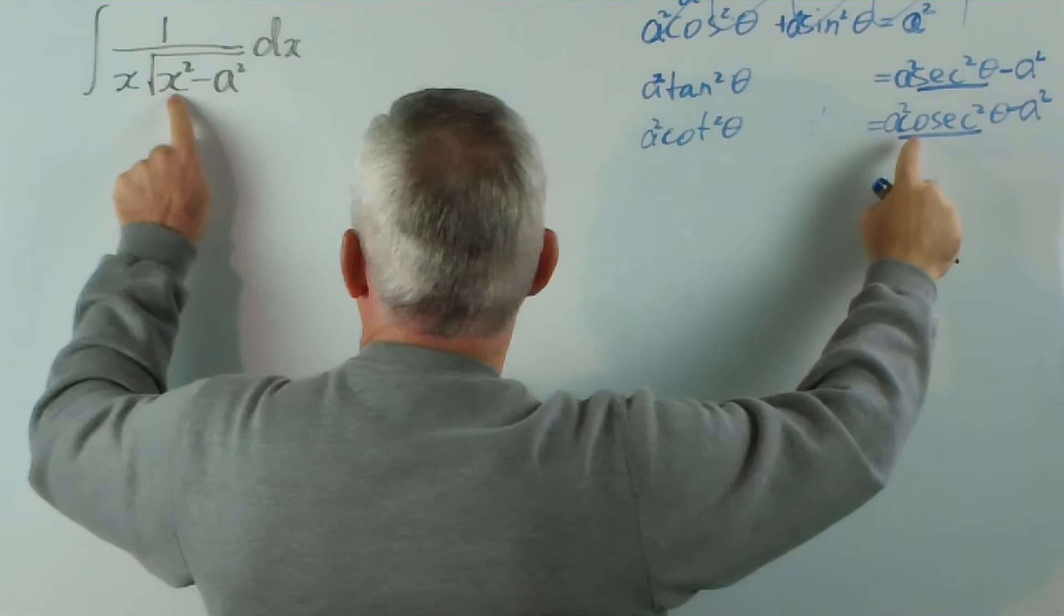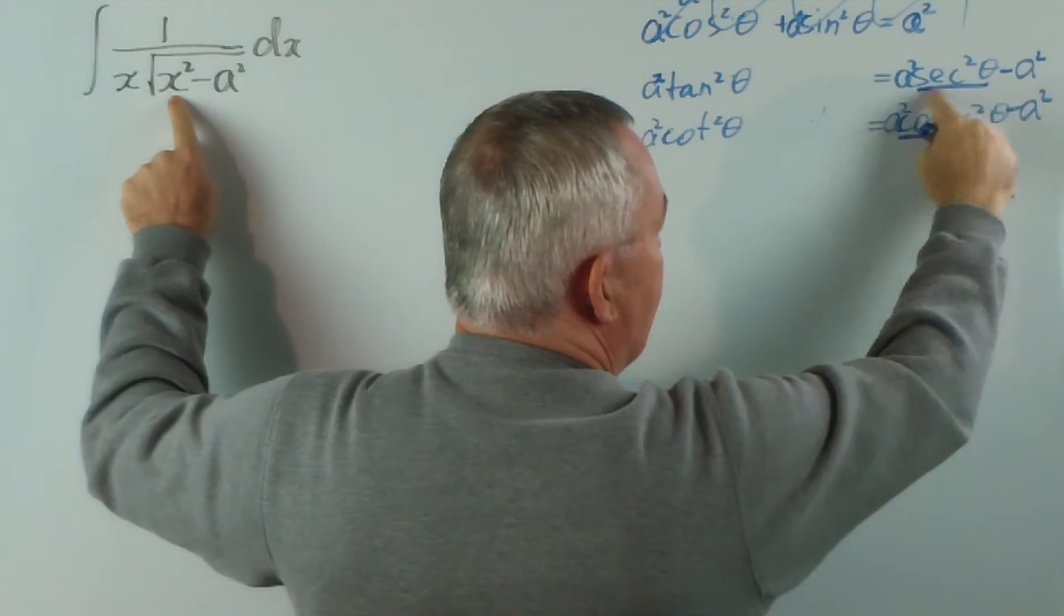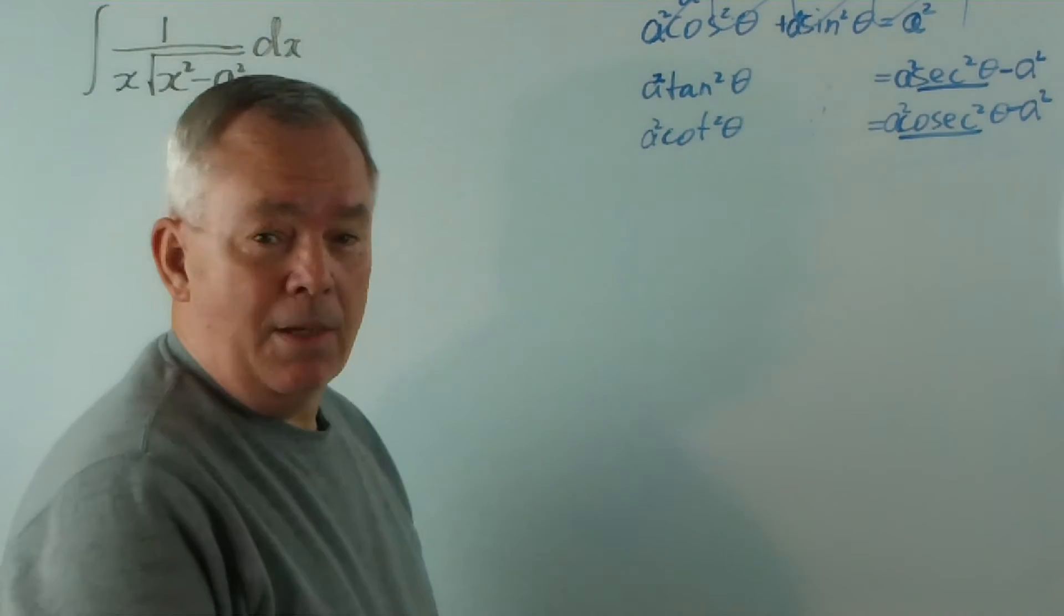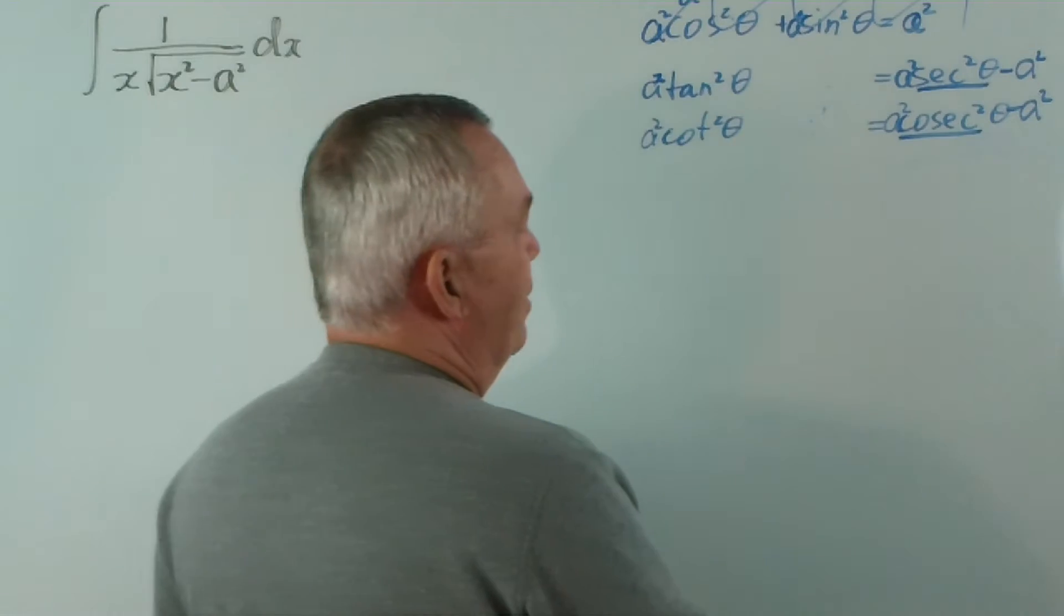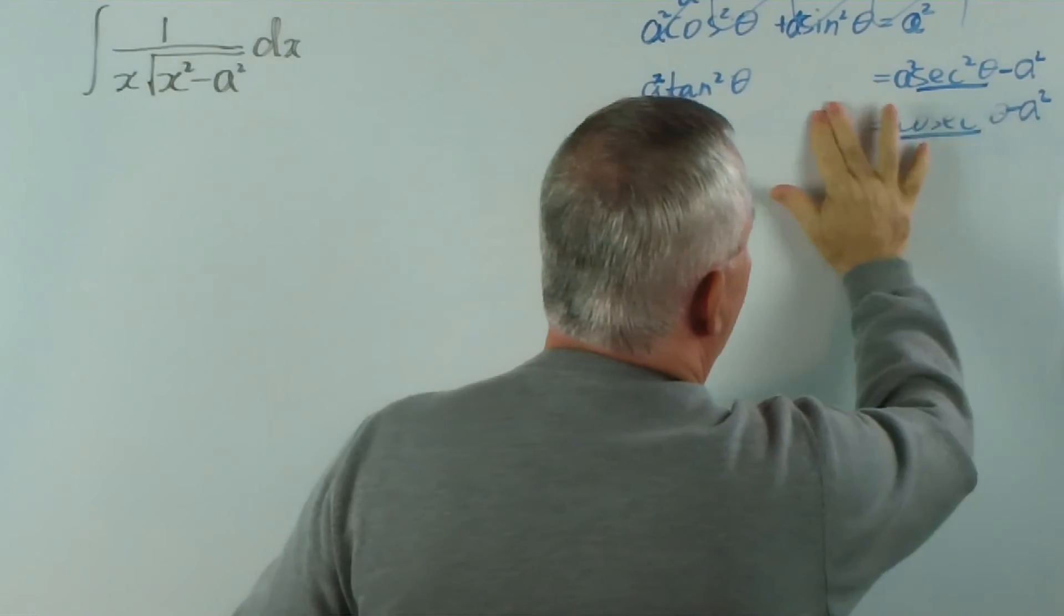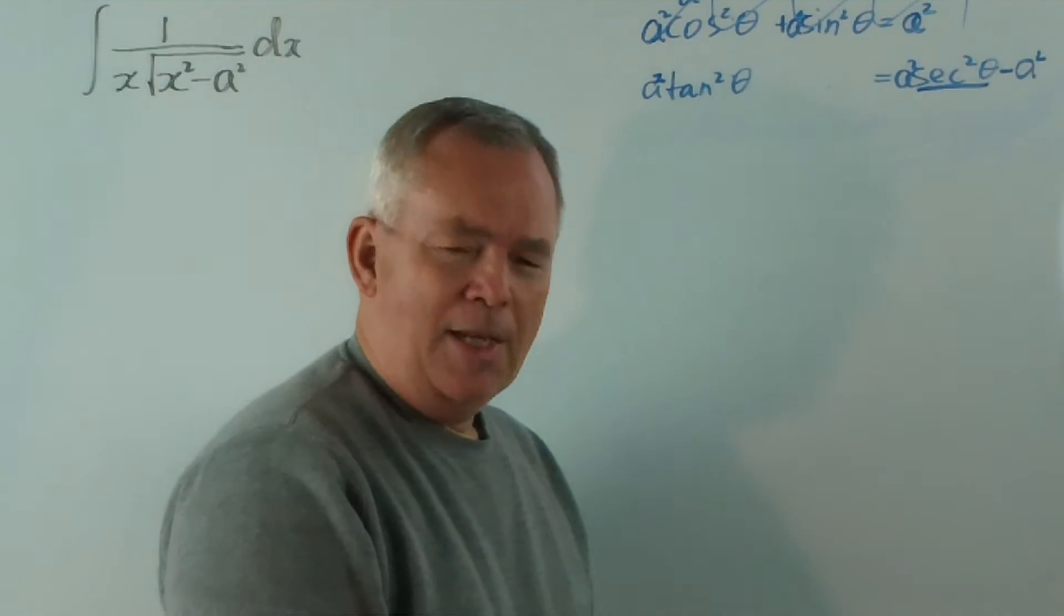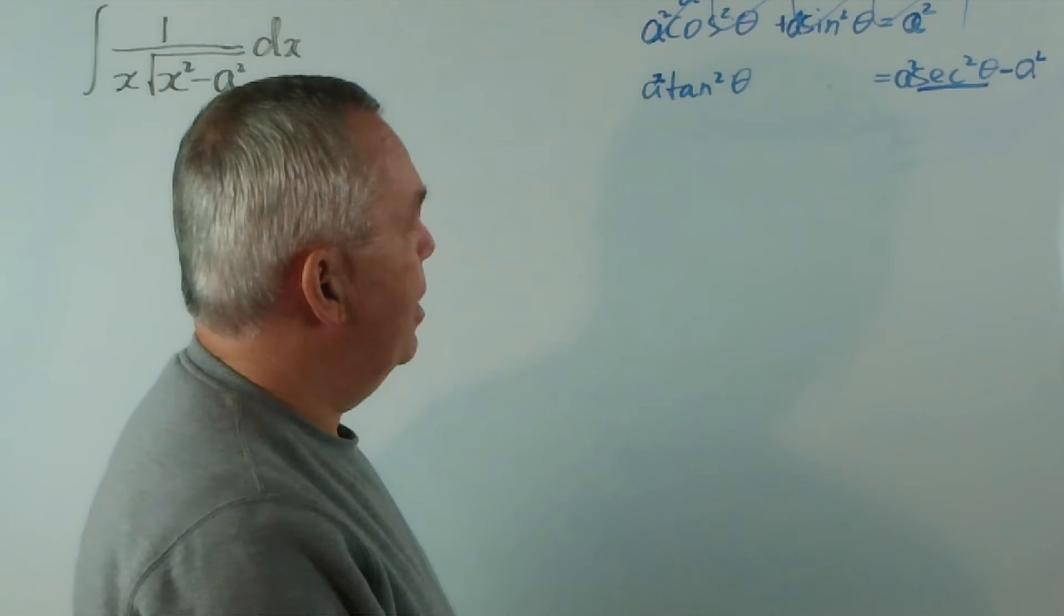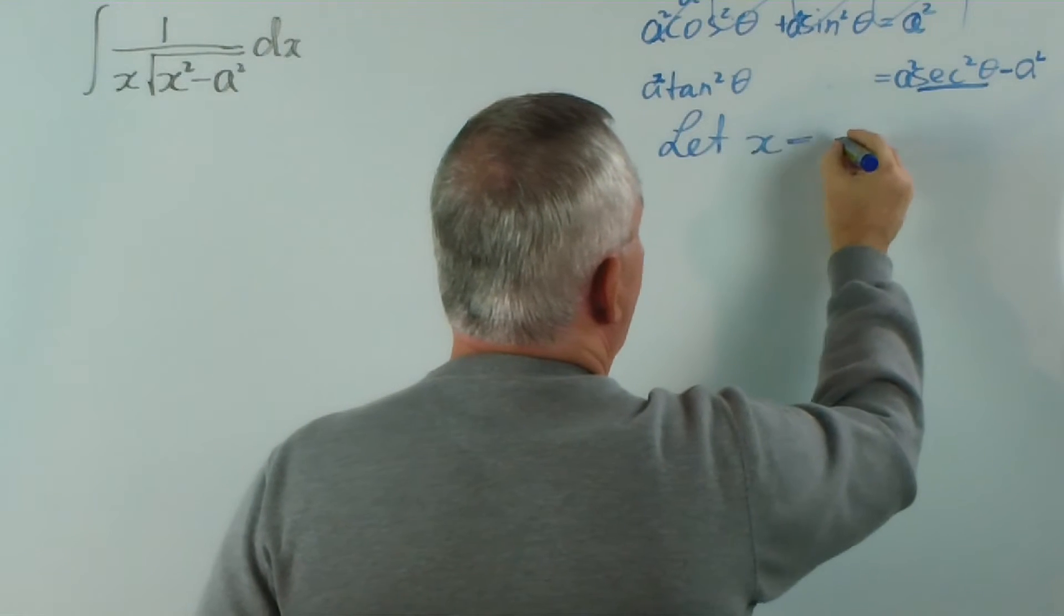In other words, if we let x equal a sec theta, or x equal a cosec theta, we'll be able to get this nice difference between squares and resolve it in this way. Really, either of them are fine. Now which one would you choose? Well, there's not a great deal of difference between them. I'm going to choose this first one, but I suggest that you make an exercise of solving this equation using the other substitution of a cosec theta at some point.